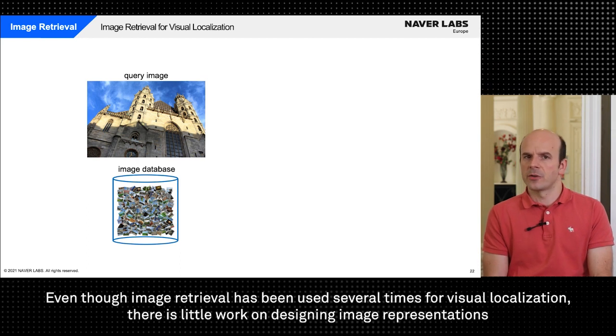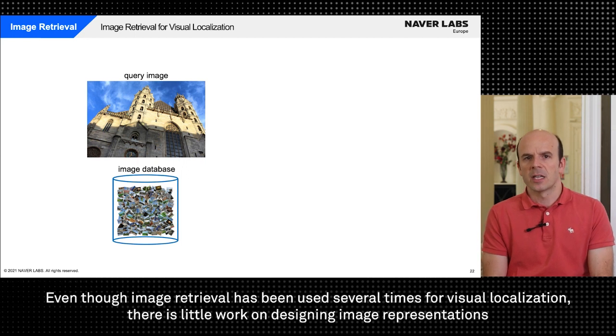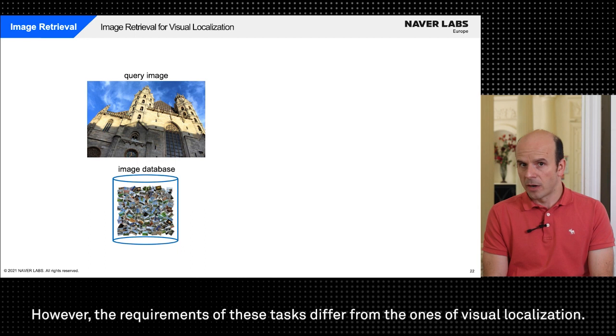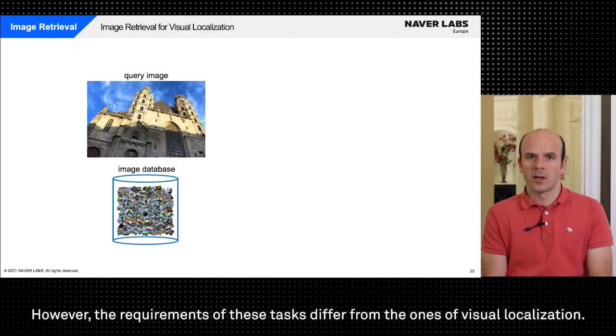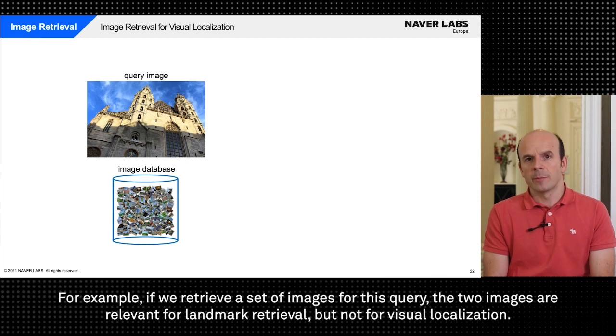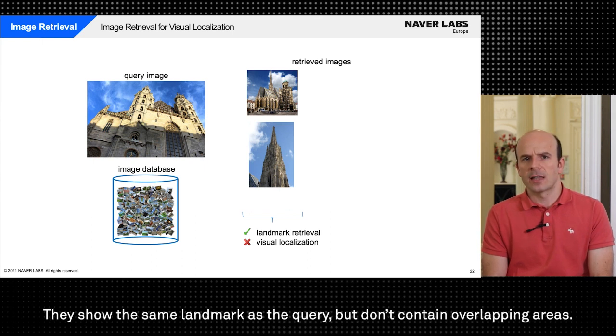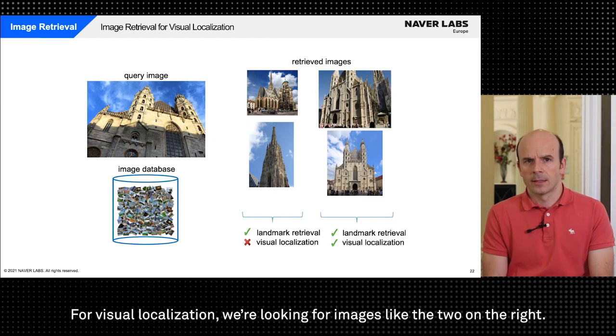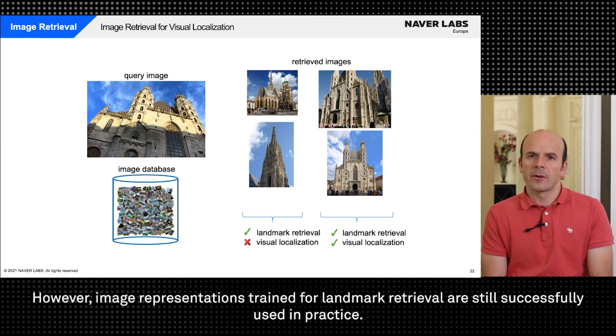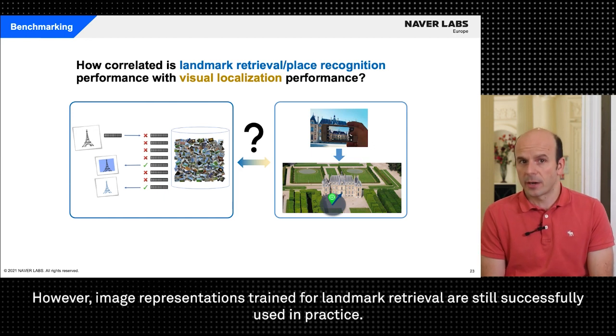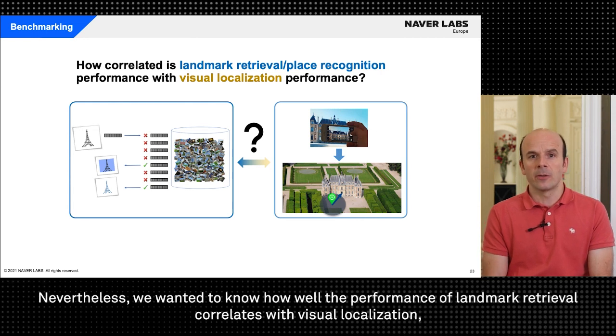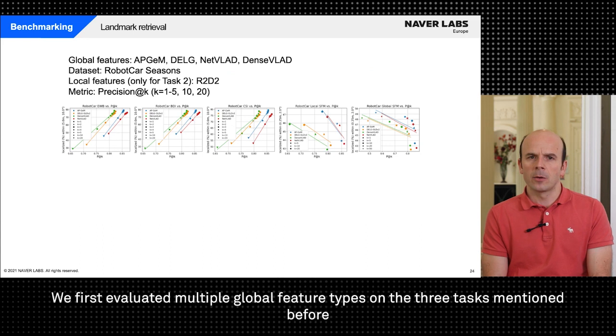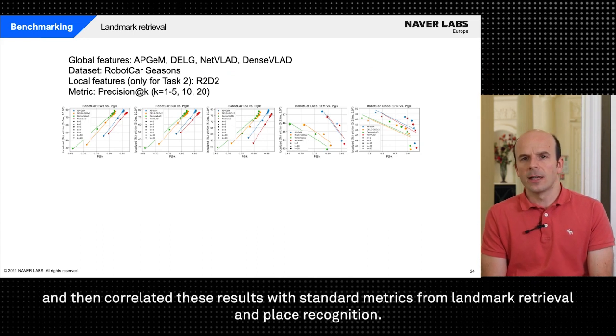Even though image retrieval has been used several times for visual localization there is little work on designing image representations specifically tailored to this task. In fact global image representations that are often used in practice are trained for landmark retrieval or place recognition. However the requirements of these tasks differ from the ones of visual localization. For example if you retrieve a set of images for this query, the two images are relevant for landmark retrieval but not for visual localization. They show the same landmark as the query but don't contain overlapping areas. For visual localization we are looking for images like the two on the right. They show the same landmark and are taken from similar positions. However image representations trained for landmark retrieval are still successfully used in practice. Nevertheless we wanted to know how well the performance of landmark retrieval correlates with visual localization so we designed a novel and unique benchmark to analyze that.